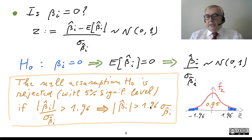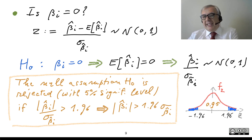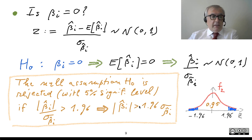1.96 can be rounded to 2. So the idea is that if the absolute value of the parameter is greater than twice its standard error, we reject the hypothesis that the true value equals zero — we decide we should keep this parameter in the model. Otherwise, if we accept the null hypothesis, we could discard the parameter because it plays no role in the model.